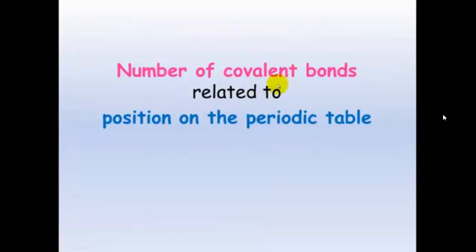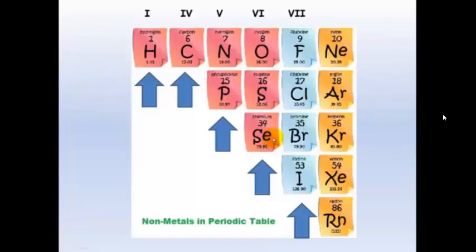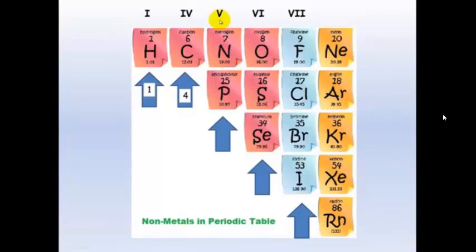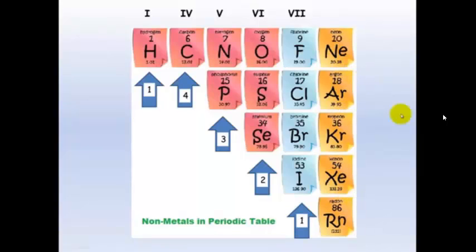To work out the number of covalent bonds an atom will form, we can look at its position on the periodic table. Hydrogen is in group one with one valence electron, so it forms one covalent bond. Carbon has four in its outside shell, so it needs to form four covalent bonds. Nitrogen and phosphorus are in group five, so they form three covalent bonds. Oxygen, sulphur and selenium are in group six and will share two electrons, forming two bonds. Group seven atoms have seven in their outside shell and only need to form one covalent bond. And of course the noble gases are unreactive.